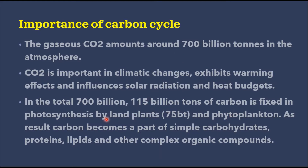In total, 700 billion tons — 115 tons of carbon — is fixed in photosynthesis by land plants and the phytoplankton living in the water or oceans. As a result, carbon dioxide is turned into organic carbon and becomes part of simple carbohydrates, then proteins, lipids, and other complex organic compounds.